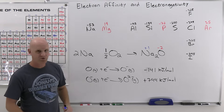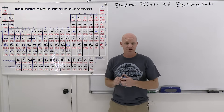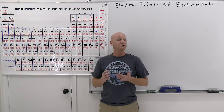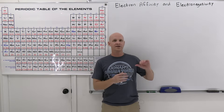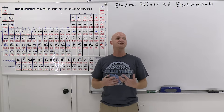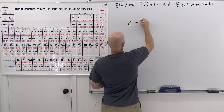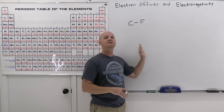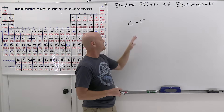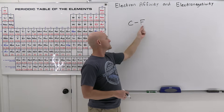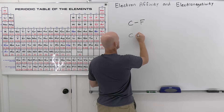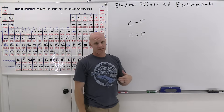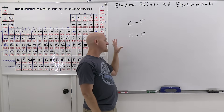Now we'll contrast that with electronegativity. First thing you should know is that fluorine is king — fluorine is the most electronegative element on the periodic table. In covalent bonding, typically two non-metals are bonded to each other and sharing electrons. If we draw a bond between carbon and fluorine representing shared electrons, those electrons aren't going to be shared evenly. Whoever is more electronegative pulls the electrons closer to them — and fluorine is king, so the electrons spend more time closer to fluorine and less time closer to carbon.